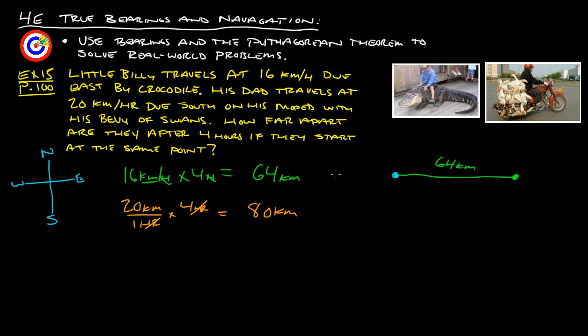Billy has gone 64 kilometers east. So here is Billy and his Crocodile. Now, dad starts also from the same point, and he has traveled south for 80 kilometers. There's where dad and his bevy of swans are. We want to figure out how far apart they are. So we want to figure out what that is. Back to just good old Pythagorean theorem. A squared plus B squared equals C squared.